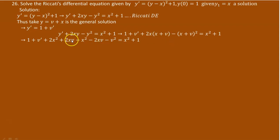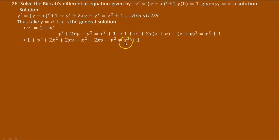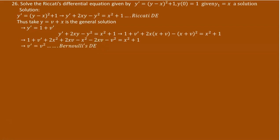From the expansion: 2x times x makes 2x squared, and 2x times v makes 2xv. When you square (x plus v), x squared plus 2xv plus v squared comes. Due to the minus sign outside, all terms carry a negative coefficient. Now, look — there are terms to cancel: 2x squared minus x squared makes x squared, which cancels the x squared on the right. The 2xv cancels minus 2xv, and the 1 cancels the 1. The only remaining equation is v prime equals v squared, which is a Bernoulli differential equation.